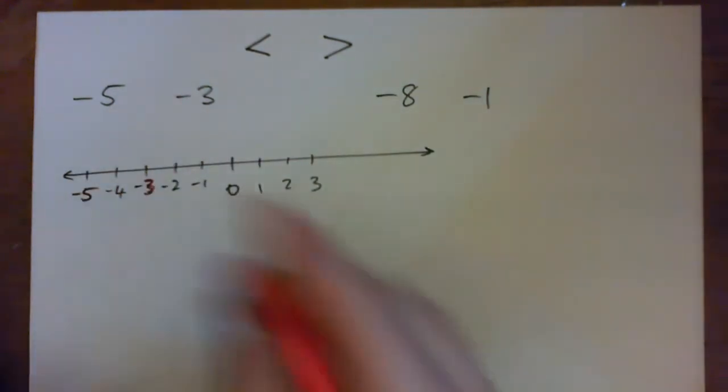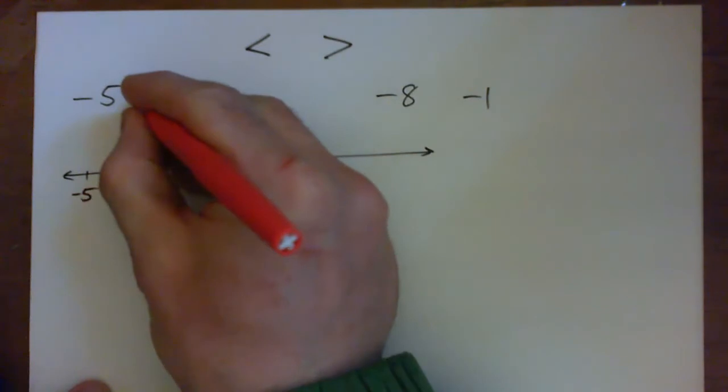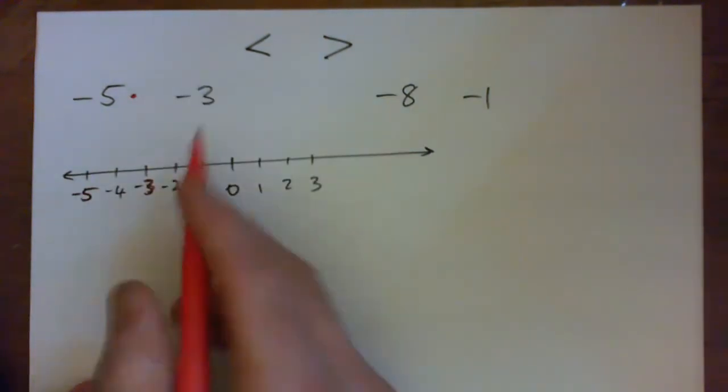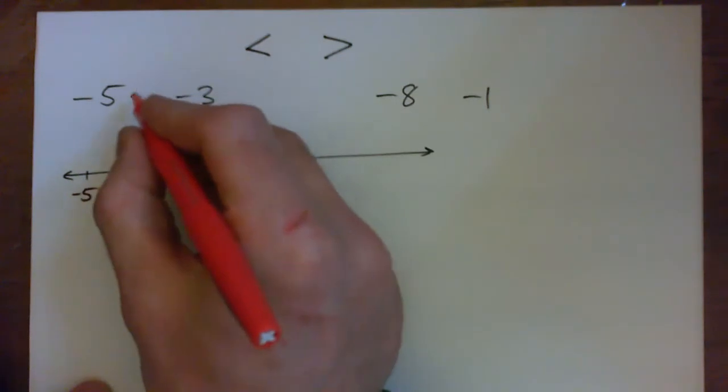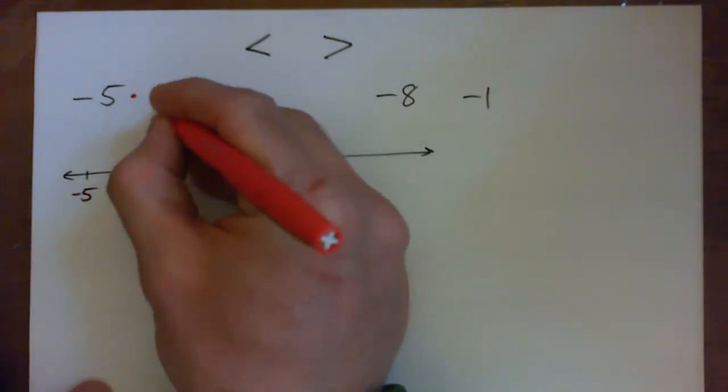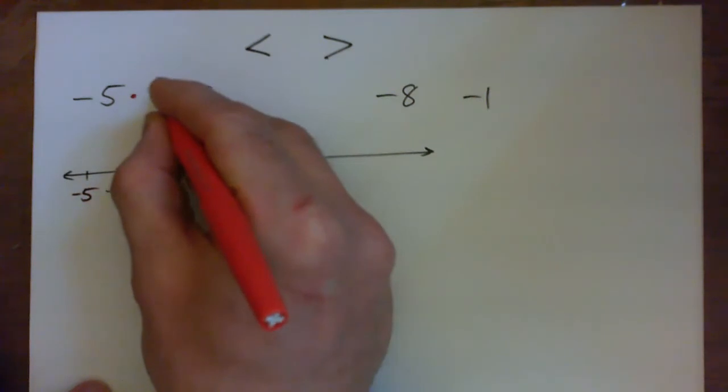So negative five, even though to your eyes it kind of looks bigger, it's actually less than negative three. So negative five gets the little point and negative three gets the gap. The gap is bigger than the point on the inequality sign.